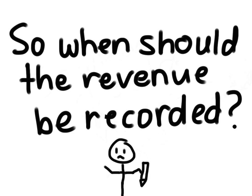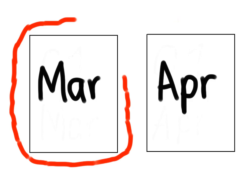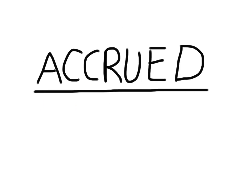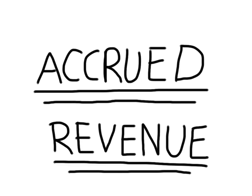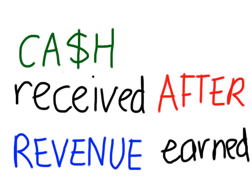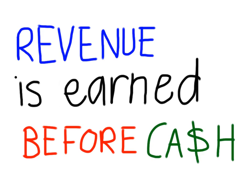So when should the revenue be recorded? March. You earned the revenue when you washed the car, even though it wasn't until later that you received it. This means that the receipt of cash is not required to record revenue. This is known as accrued revenue — when cash is received after revenue is earned, or in other words, revenue is earned before cash is received.